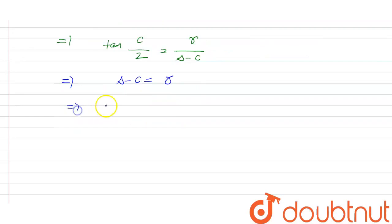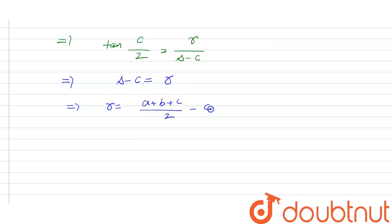We can write this as r equals s, which is (a + b + c)/2, the semi-perimeter, minus c. From here what we get is small r equals (a + b - c)/2. Let this be the second equation.